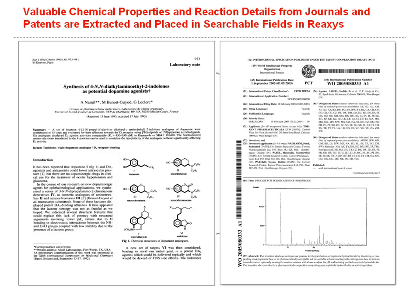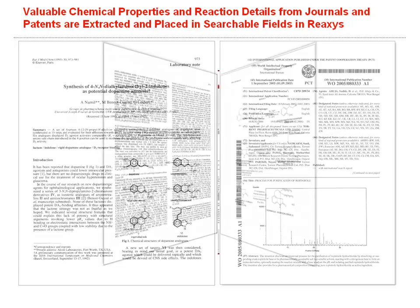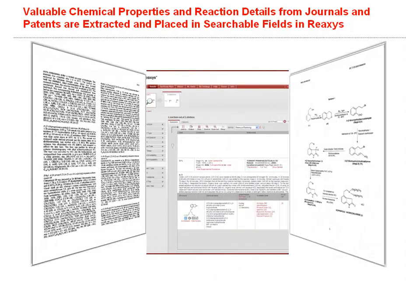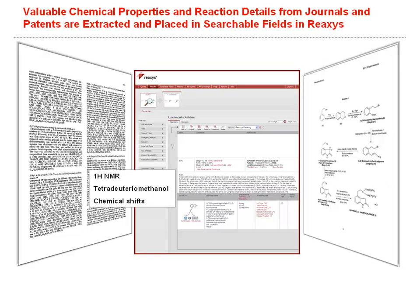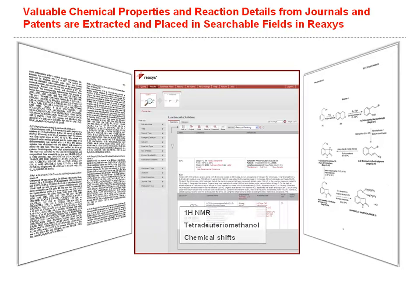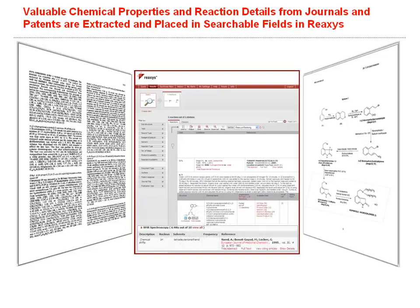Valuable chemical properties and reaction details taken from journals and patents are extracted and placed into hundreds of searchable fields in ReAxis. And hundreds of searchable fields means versatility in querying.